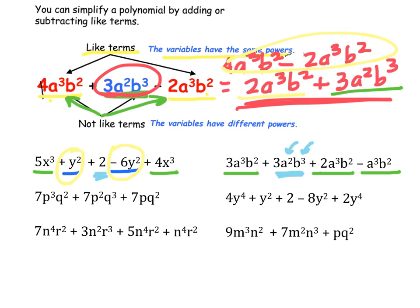For 7p cubed q squared plus 7p squared q cubed plus 7p cubed q squared: I don't see a p cubed q squared matching another term — I don't see a p squared q cubed matching either — so all terms are unlike, and I couldn't simplify that at all. For 4y to the fourth plus y squared plus 2 minus 8y squared plus 2y to the fourth: 4y to the fourth and 2y to the fourth are like terms, y squared and minus 8y squared are like terms, and 2 is all by itself.